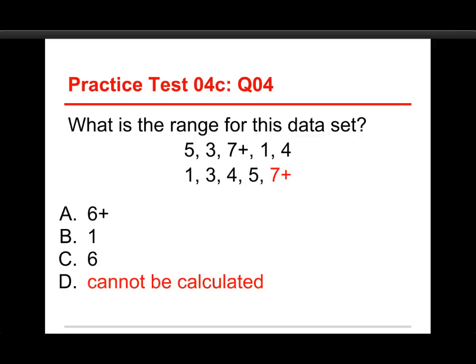If you take the values and put them into order, which is something you should always do, you see that the last one is 7 plus. That's not a number, that's a category, and you can't use a category and subtract a number, so it just can't be calculated.